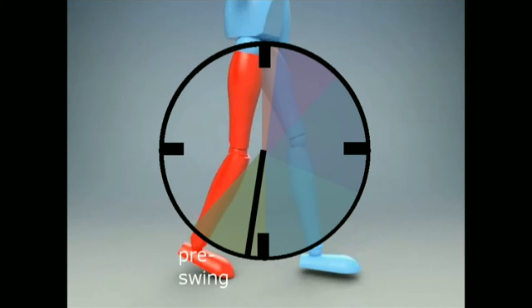Pre-swing is when the reference limb pushes off the ground. This phase covers 12 percent of the cycle.